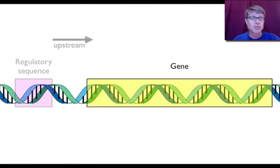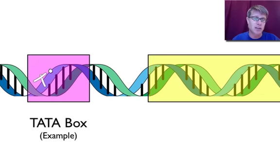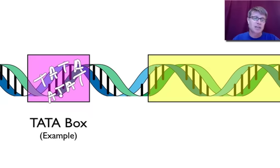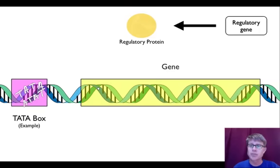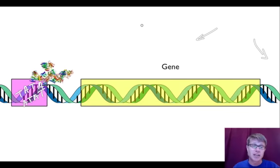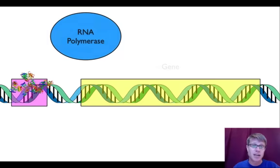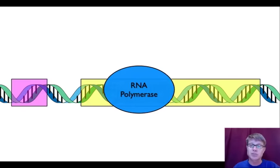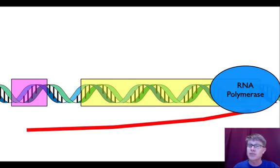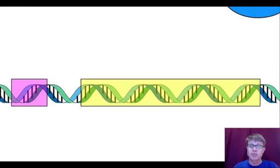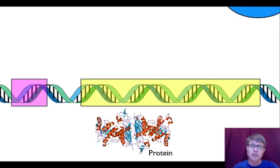We've got a gene, and upstream of that we have a regulatory sequence. An example in eukaryotes is the TATA box — it's called that because you have thymine, adenine, thymine, adenine, and the complementary sequence on the other strand. This is simply a sequence above the gene that allows RNA polymerase to get on. A regulatory protein comes from another regulatory gene elsewhere. An example is the TATA binding protein, found in us — it grabs onto the TATA box and allows RNA polymerase to grab on and express that gene. Without the regulatory sequence or the regulatory protein, we can't make the RNA polymerase and we can't make the protein.